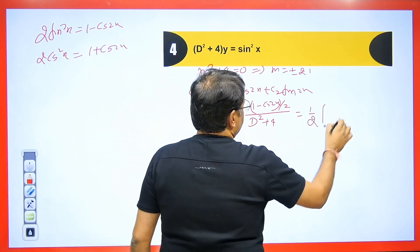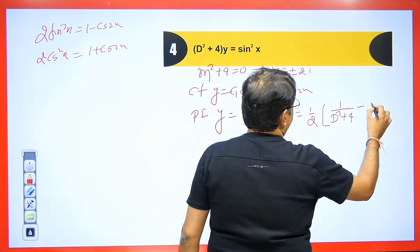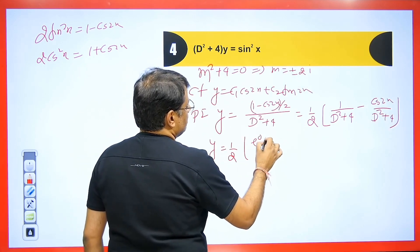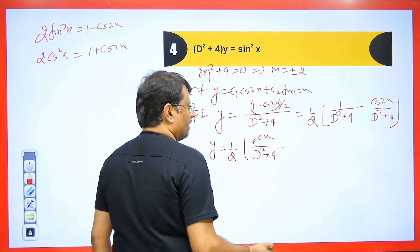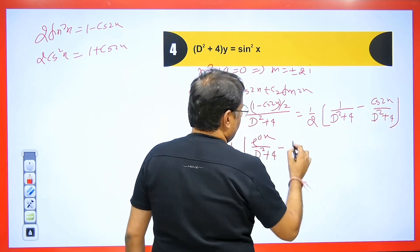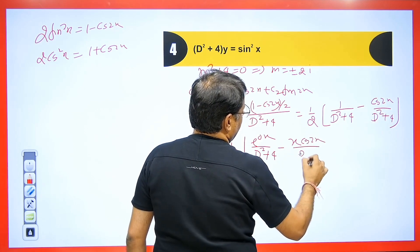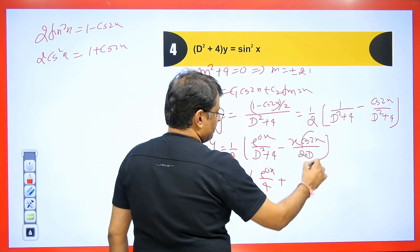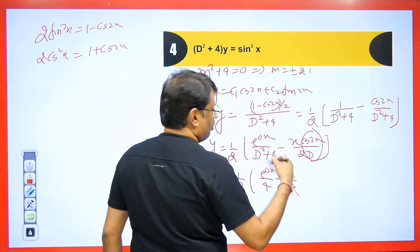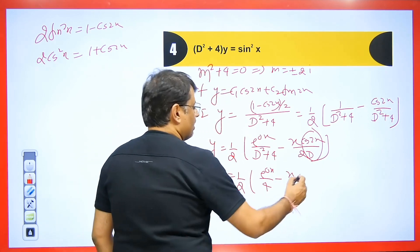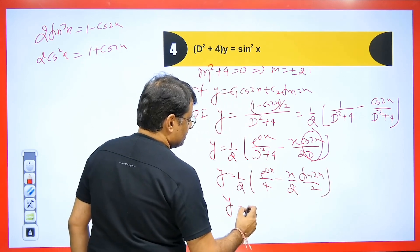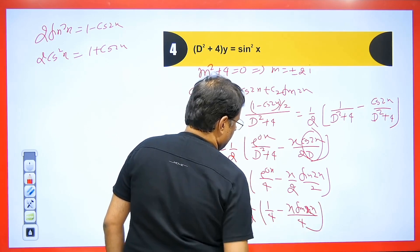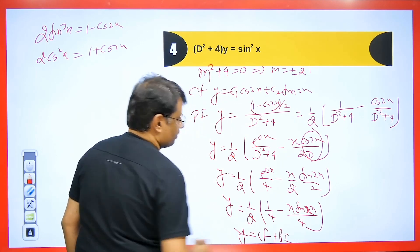We write PI = (1/2)[1/(D² + 4) − cos 2x/(D² + 4)]. For the constant term 1, we treat it as e^(0x): put D² = 0, giving 1/4. For the cos 2x term, D² = −4 gives −4 + 4 = 0, so we multiply by x and differentiate. This gives (x/2) · integration of cos 2x, which is sin 2x / 2. So PI = (1/2)[1/4 − x·sin 2x/4] = 1/8 − x·sin 2x/8. Final answer: CF + PI.